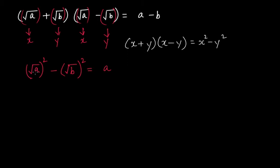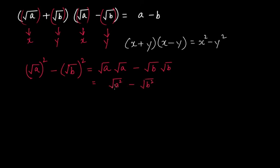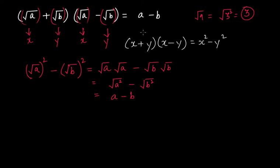This gives you a. Square root of a squared means square root of a multiplied by square root of a, minus square root of b multiplied by square root of b. This gives you square root of a squared minus square root of b squared. For example, square root of 3 squared is square root of 9, which equals 3. So square root of a squared equals a, giving us a minus b.